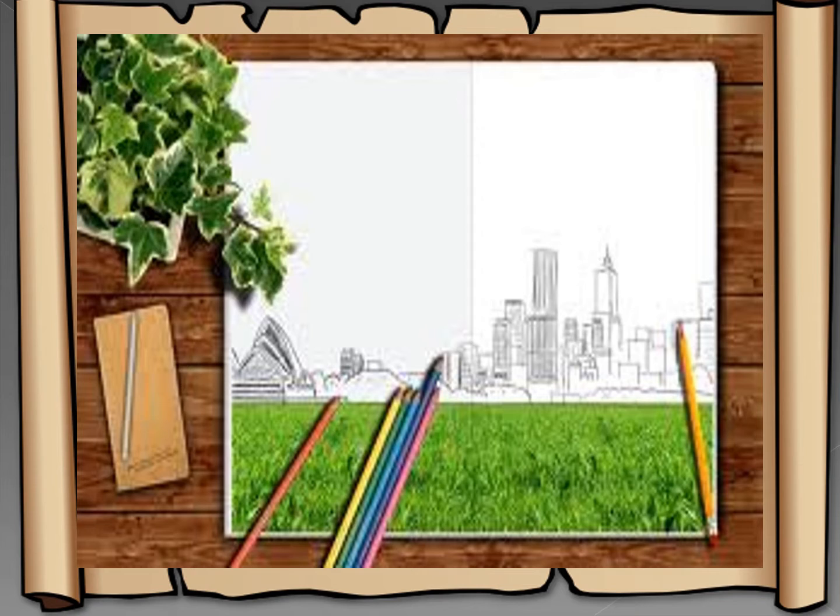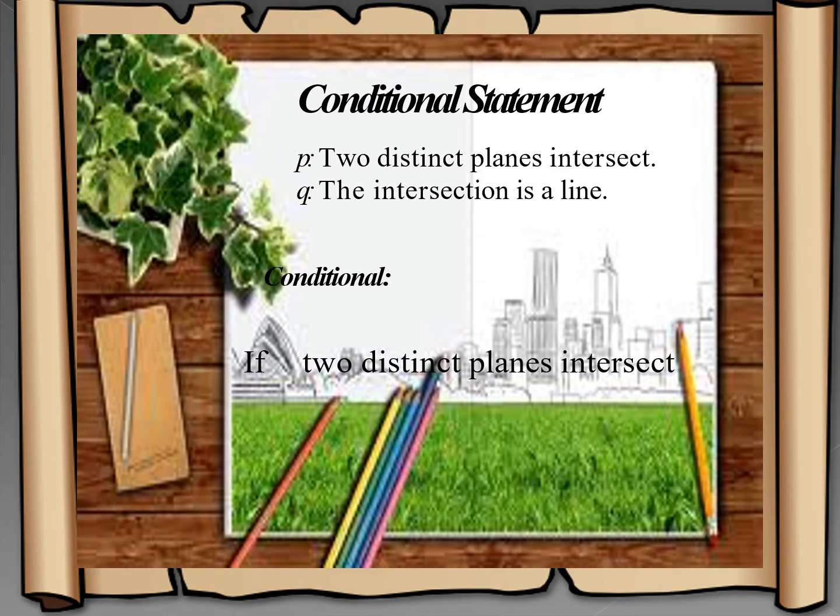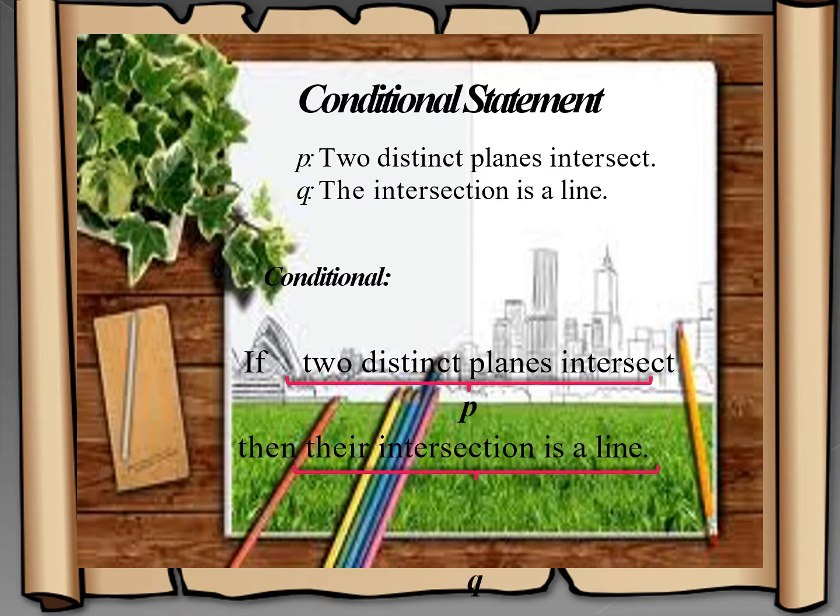Now, let's take a look at this. We have here P: two distinct planes intersect, and we have Q: the intersection is a line. If we write it in if-then form, the statement would be: if two distinct planes intersect, then the intersection is a line. The if is followed by our P, and the then word is followed by our Q.